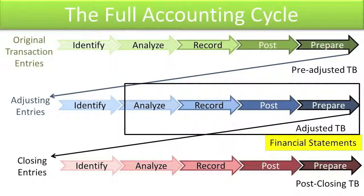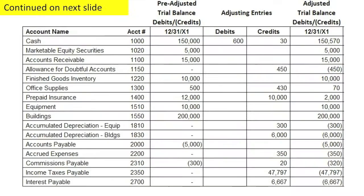Let's see what we've accomplished. We analyzed, recorded, and posted the adjusting journal entries, and now we're going to look at preparing the adjusted trial balance. This is an example of a trial balance worksheet that some companies use. They bring in their pre-adjusted trial balance numbers and then show the debits or credits they think they need to properly adjust the accounts and compute what the adjusted balances are. Then they go back and make sure the journal entries were properly recorded and posted in the actual accounting information system.